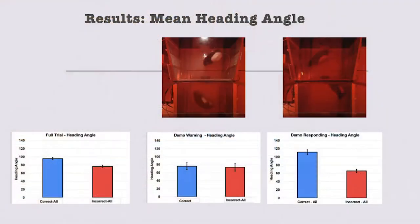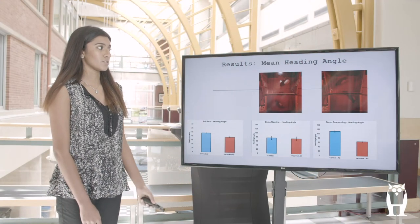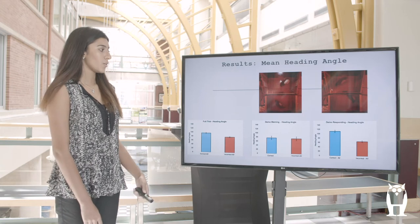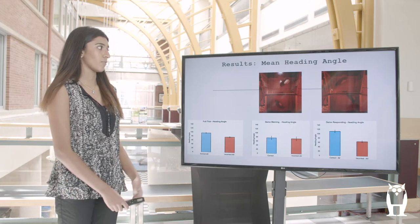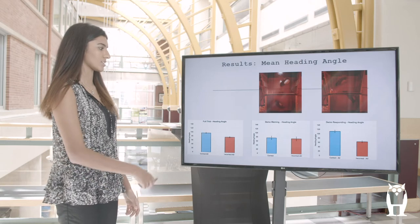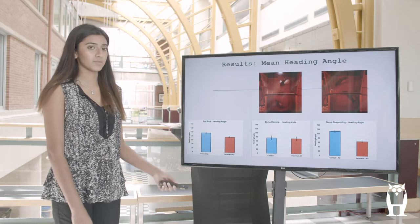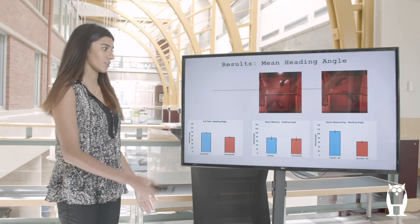These are my results. Looking at mean heading angle, we found that throughout the entirety of the trial there is a higher average heading angle in correct trials versus incorrect trials. We looked at two separate points: before the demonstrator rat had started to respond when the stimulus light was going on, and when the nose poke light went on and the demonstrator was getting ready to respond. We found little to no difference in heading angle before the demonstrator rat was responding, but when the demonstrator rat was actually performing there was a higher average heading angle in correct trials versus incorrect trials.